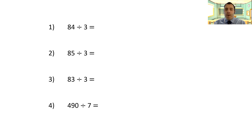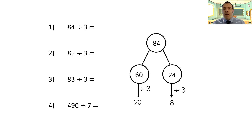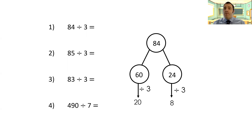So question one: 84 divided by three. We can partition 84 using some known values. I know that 10 threes are 30, so 20 threes will be 60 — I can partition that number. And I know that 24 divides by eight. So I'm going to add the two together and I've got 28.